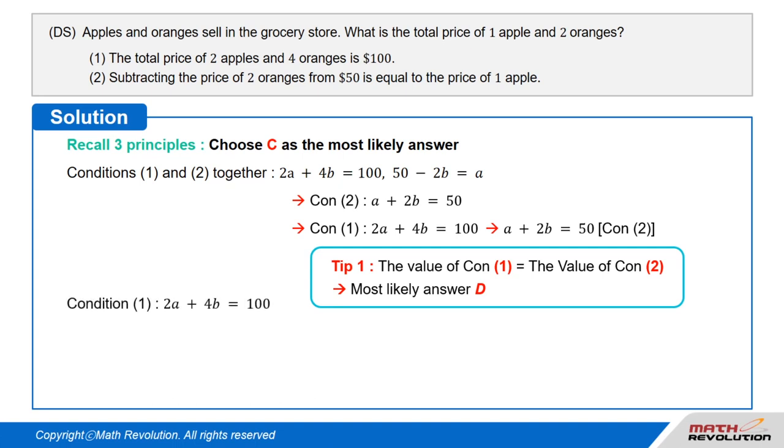Condition 1 tells us that 2 times A plus 4 times B equals 100. When we divide the equation by 2, we get A plus 2 times B equals 50. So, the cost of 1 apple and 2 oranges is $50.